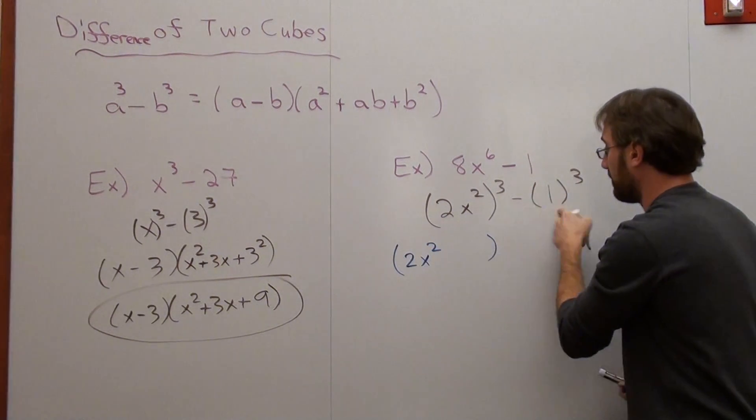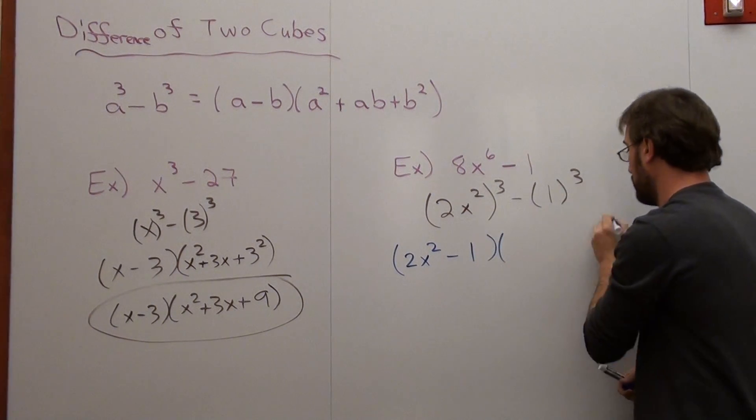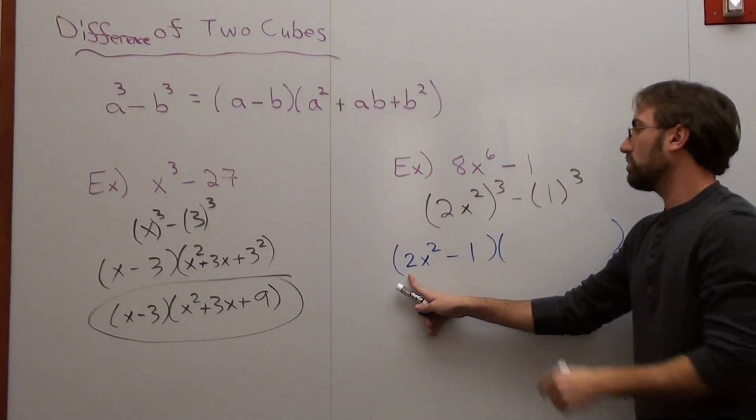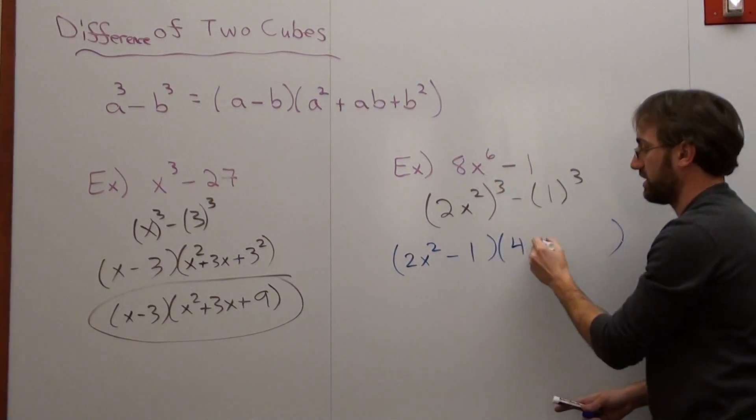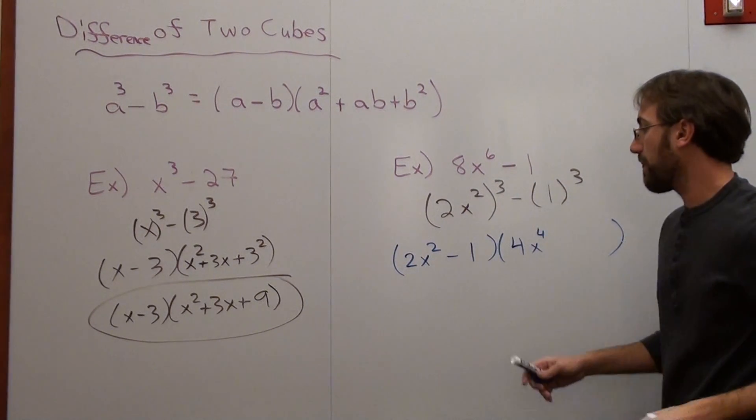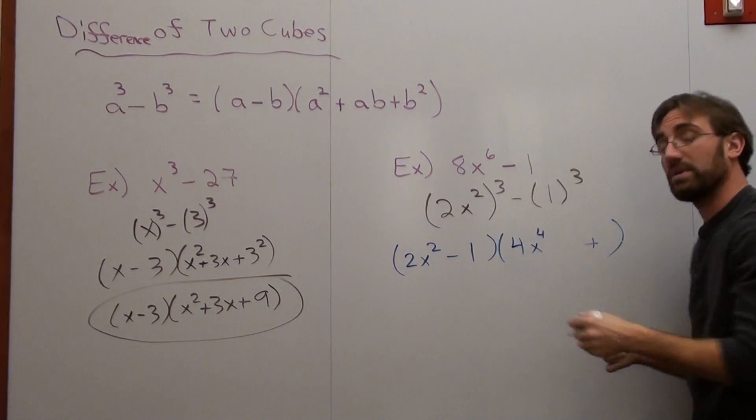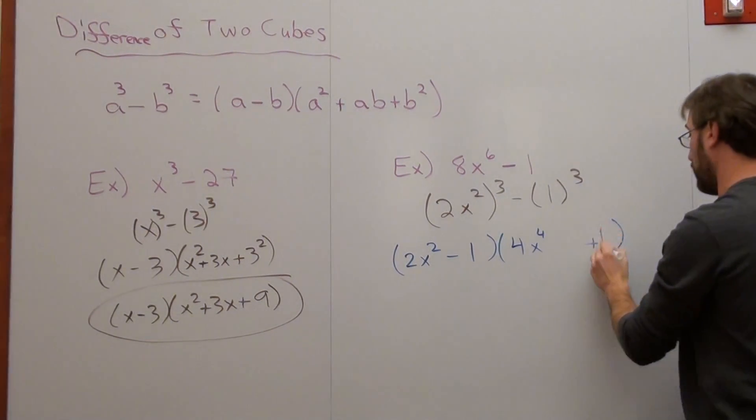It's the a term, subtracted by the b term. 2 times what would be 8? That's 4. x squared times what would be x to the sixth? It's x to the fourth. This is always going to be a positive, the last term. And it's 1 squared. You just put 1.